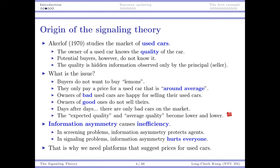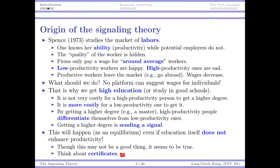In a screening game, information asymmetry protects the agent but hurts the principal. In a signaling game, in some sense, the problem is even worse because information asymmetry is going to hurt both the buyer and the seller. Eventually, how may we solve this problem? Thanks to information technology and the internet, we now have many platforms that suggest reasonable prices for used cars and workshops that can investigate used cars. That helps buyers reveal the hidden quality of used cars and helps eliminate or at least alleviate information asymmetry to enhance efficiency.